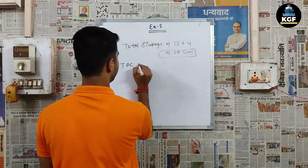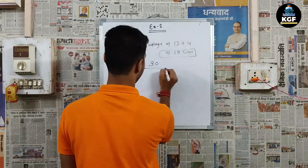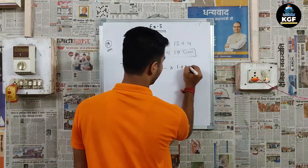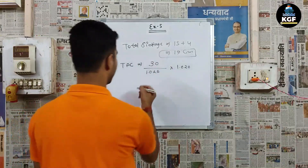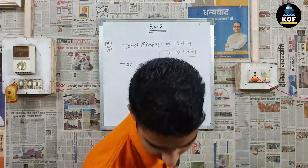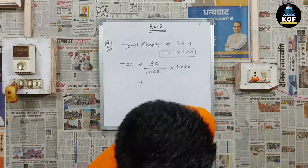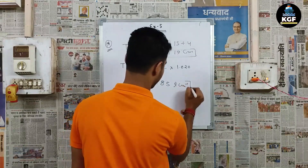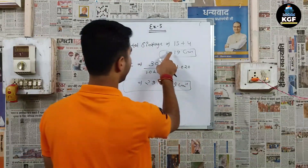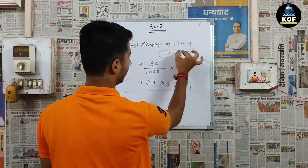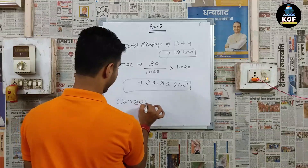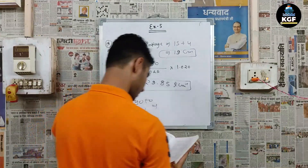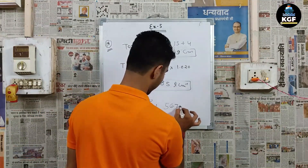Now we find the TPC in dock water. Saltwater TPC is 30; we divide by the saltwater density and multiply by the new density: TPC (dock water) ≈ 29.85 tonnes per centimetre. Multiplying total sinkage by this TPC: 19 × 29.85 = 567.2 tonnes. That is the answer for Question 19.